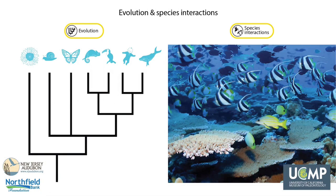Evolution and species interaction profoundly affect the Earth's system. For example, the evolution of photosynthesis dramatically increased oxygen levels in the atmosphere. Evolution is the change in characteristics of populations of organisms over time that are inherited from one generation to the next. Additionally, all species are affected by interactions with other living things, and these interactions influence the abundance, life cycles, and evolution of organisms. For example, in coral reefs, species compete for limited space, and various fish, starfish, and snails live in and feed on coral and algae.